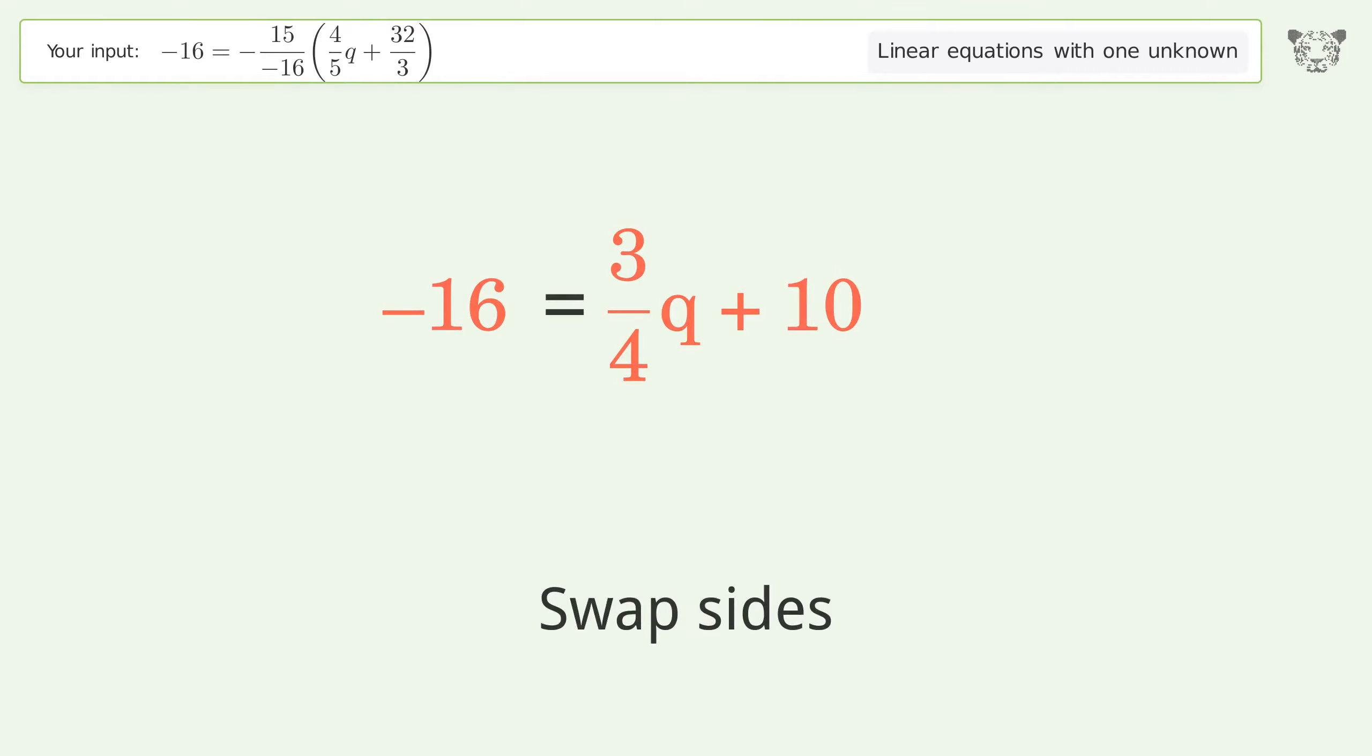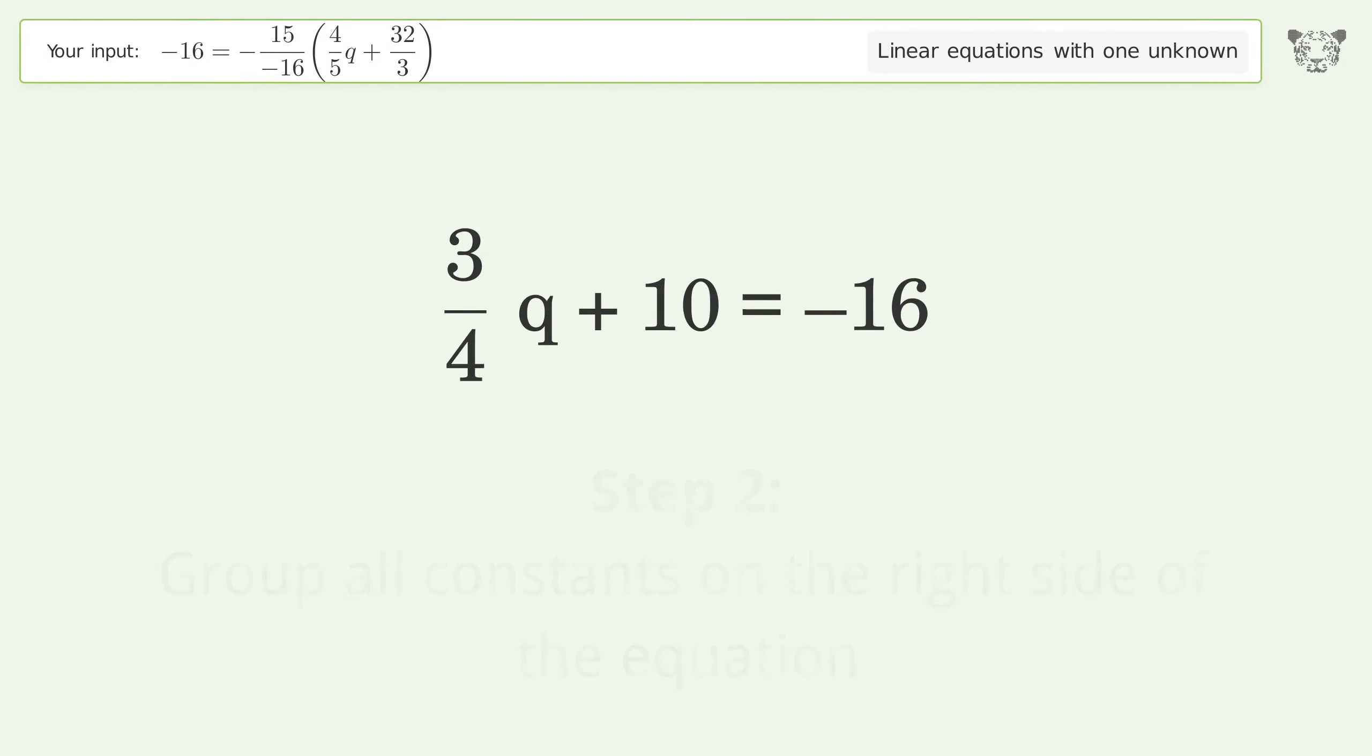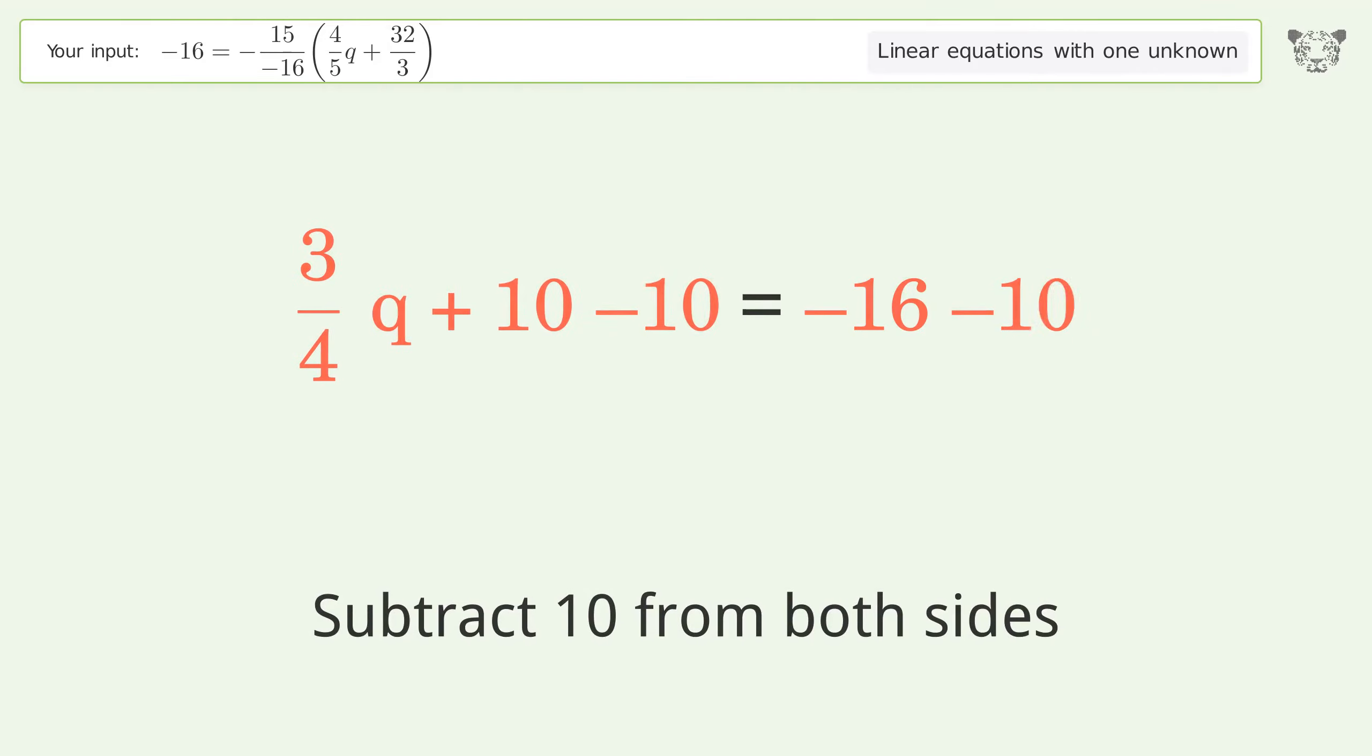Swap sides. Group all constants on the right side of the equation. Subtract 10 from both sides. Simplify the arithmetic.